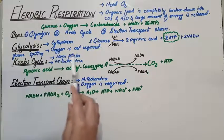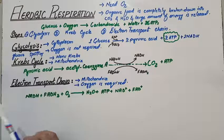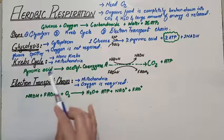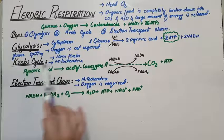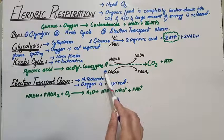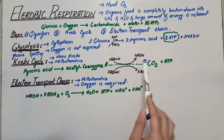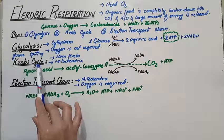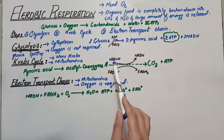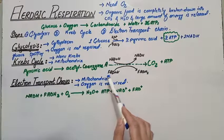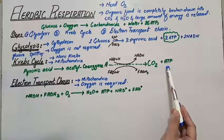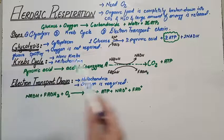To recap the Krebs cycle: it was discovered by Hans Krebs and occurs in the mitochondria because essential enzymes are present there. Before entering the mitochondria, pyruvic acid is converted into acetyl coenzyme A. Through a series of cyclic stepwise reactions, NAD is reduced to NADH, FAD is reduced to FADH2, carbon dioxide gas is released, and ATP molecules are generated.